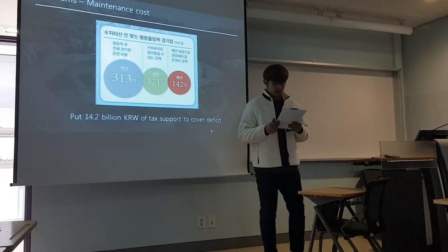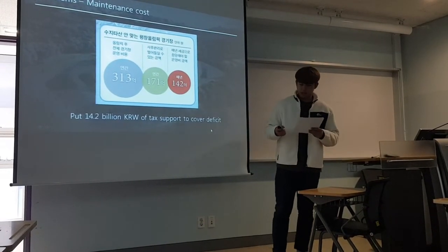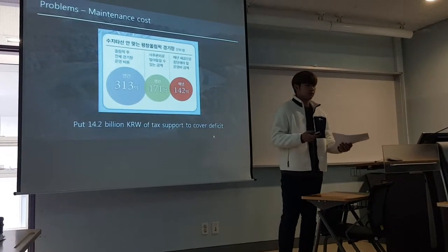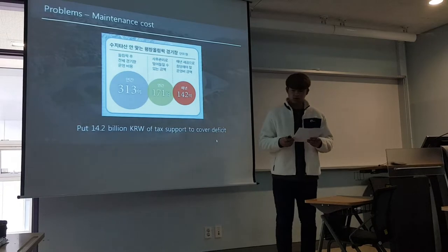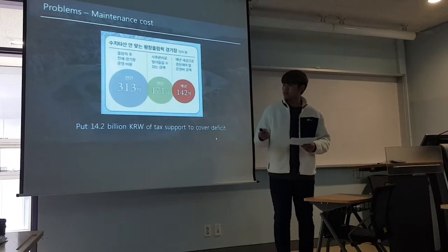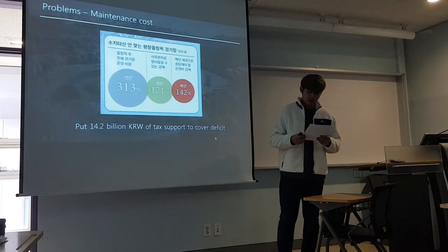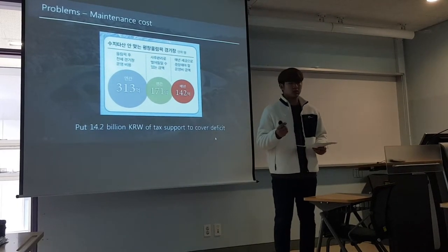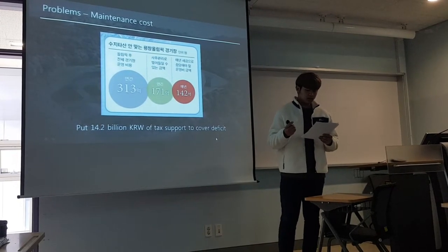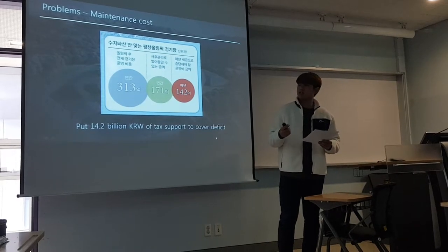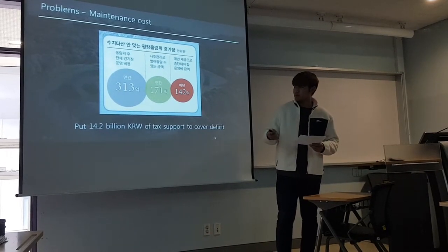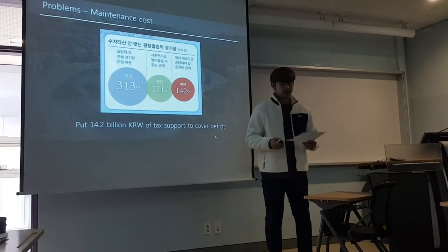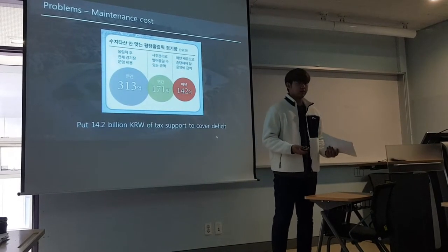The second problem is that after the Olympic games, all stadiums were left without any further usage plan. The total maintenance cost per year for PyeongChang stadiums is 31.3 billion won, and to cover the deficit the government must put in 14.2 billion won every year. So it is such a waste of time, resources, and money.